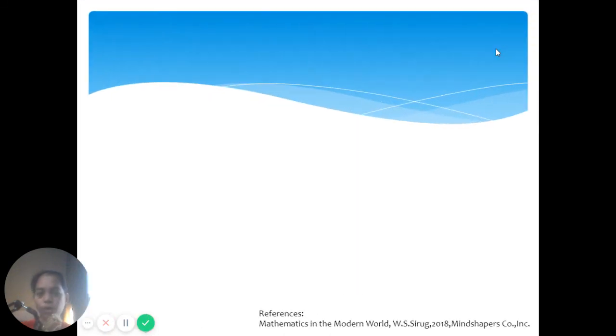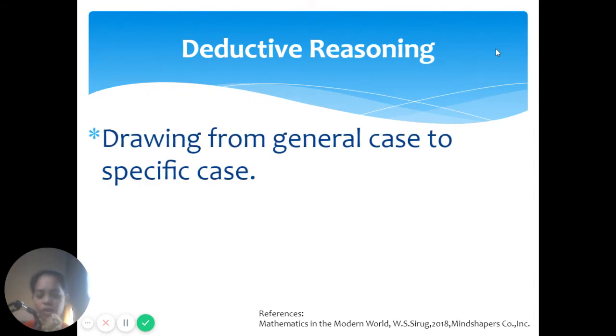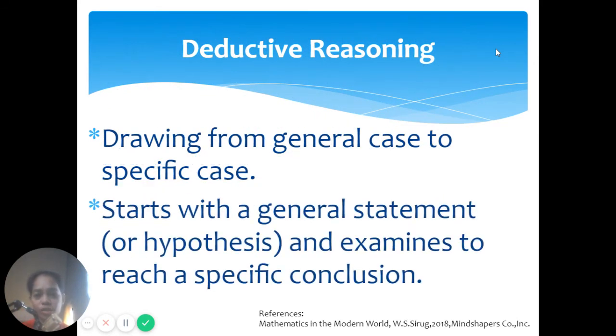Now, let's move on to deductive reasoning. Deductive reasoning is drawing general to specific examples or simply general case to specific case. Now, we start with a general statement or hypothesis, then examines to reach a specific conclusion based on the statements given.